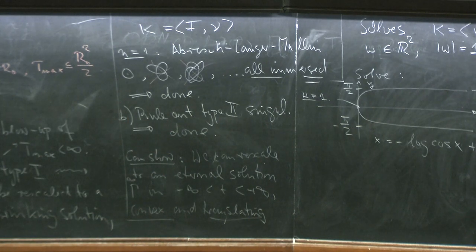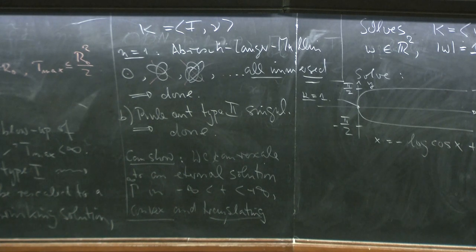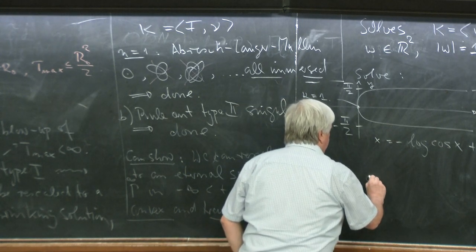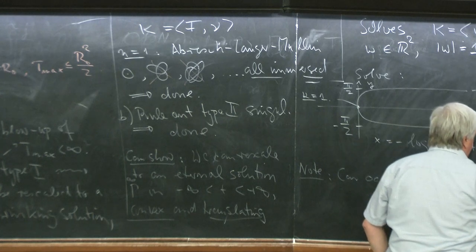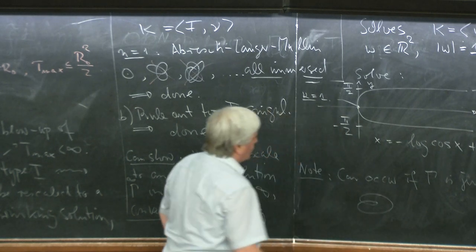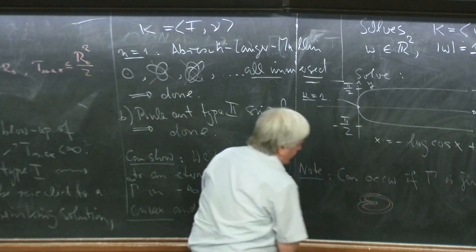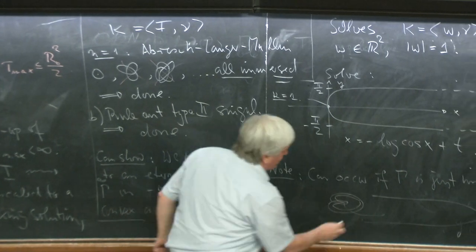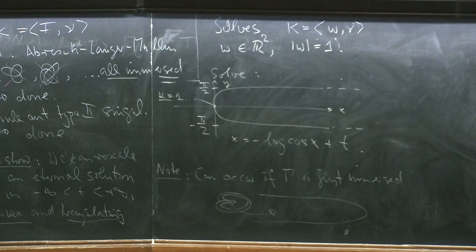We now have to rule out that this picture ever occurs. That's going to be hard, because this picture can occur if the curve gamma is just immersed. I've drawn the picture of an immersed curve which develops a cusp, and under the microscope it will give exactly the Grim Reaper picture. This means there is no chance I can use the evolution equations on quantities like d/dt kappa, d/dt ∇kappa, to rule out this picture — because these equations for kappa don't care whether it's an immersed curve or not.